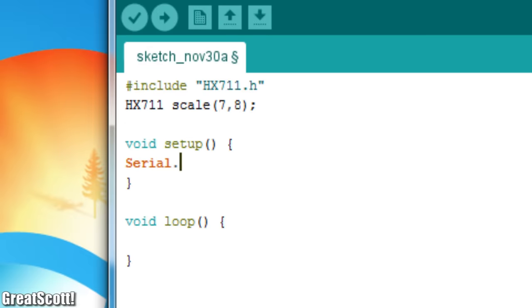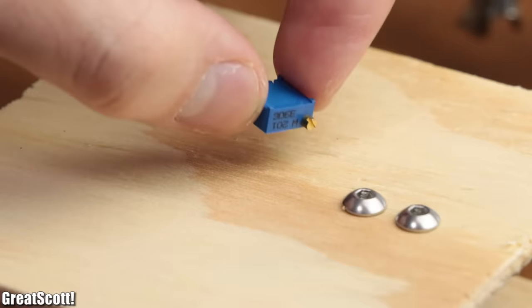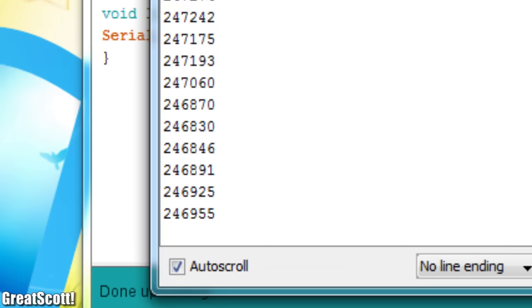like I showed right here, and utilizing the HX711 Arduino library from SparkFun, we can output the scale readings through the serial monitor, which now reacts even to the tiniest changes in weight.